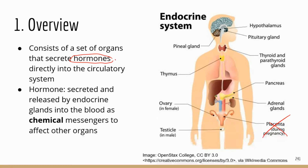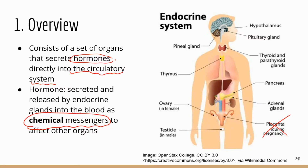Hormones are delivered directly into the bloodstream and into the circulatory system, because hormones usually affect organs that are not right next to the gland that secretes them. Hormones usually travel pretty far to get to their target organs and tissues, using the bloodstream. Hormones are chemical messengers — chemical tools for the endocrine system to regulate the function of other parts of your body.